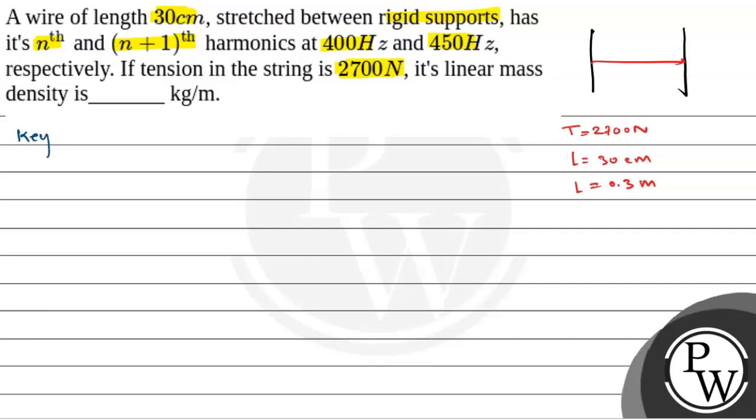This question involves a key concept, that is frequency of a wire fixed at both ends. So frequency of a wire fixed at both ends, Fn is equal to n into v by 2L. Where v is equal to square root of T by mu, that is the velocity of the wave in the wire.